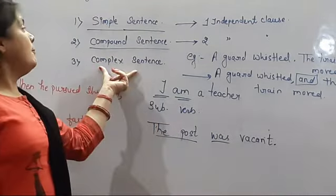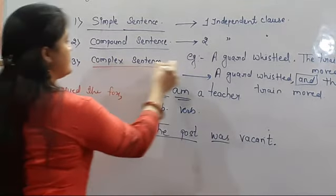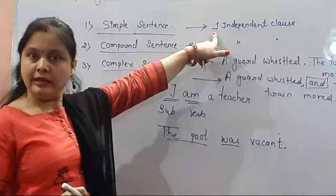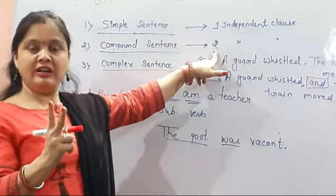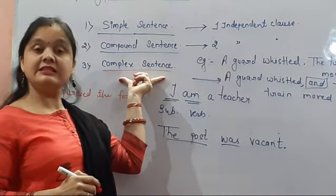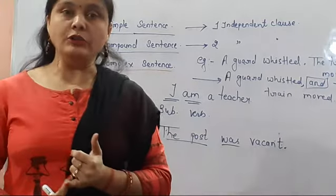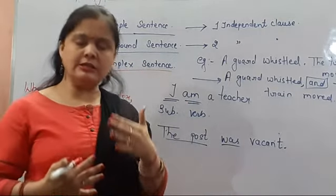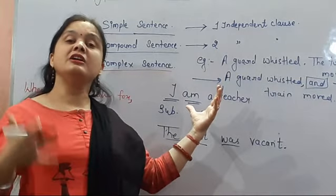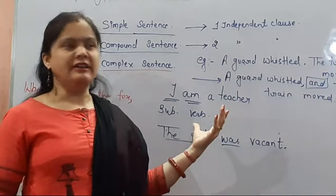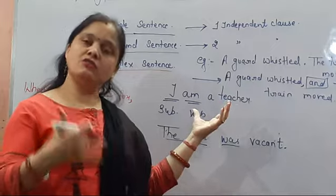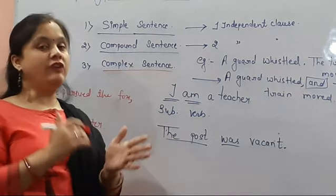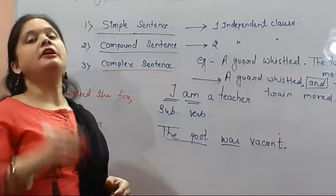Now let's move towards the third type: complex sentences. In a simple sentence there is one independent clause; in a compound sentence there are two independent clauses. But in a complex sentence, one clause is independent and one clause is dependent. In synthesis, it is not necessary that there be only two clauses — synthesis of two, three, or more sentences is also possible. In a complex sentence when you do synthesis, one clause will be independent and one clause will be dependent.